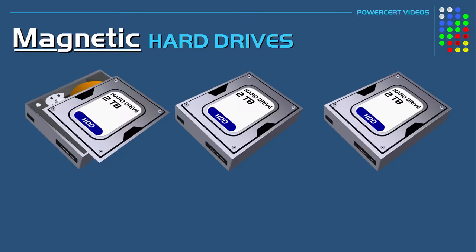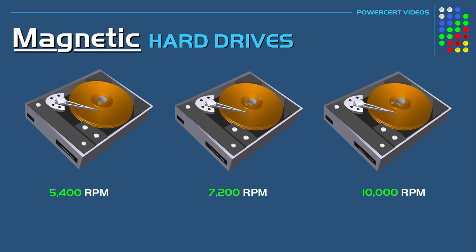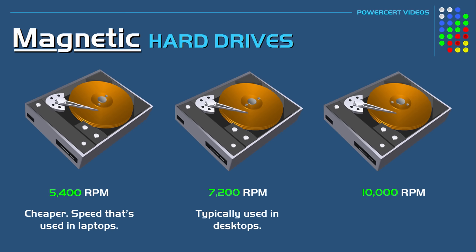These magnetic disks can rotate at high speeds of either 5400, 7200, or 10,000 RPM. The typical hard drive used today in desktop computers operates at 7200 RPM. A cheaper desktop hard drive operates at 5400 RPM, which is also the speed of a typical laptop hard drive. Higher end hard drives operate at 10,000 RPM, however these are not commonly used anymore because of the advanced speeds of solid state drives, which we'll talk about next.